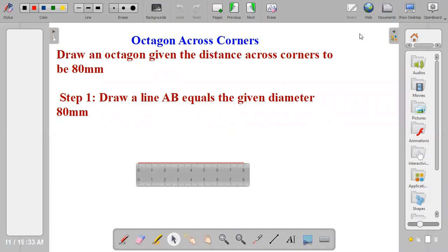The distance across corners is the diameter of the circle. So step one, draw a line AB which equals the given diameter.